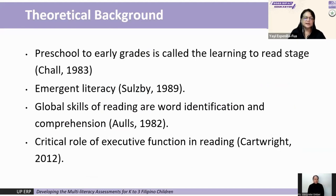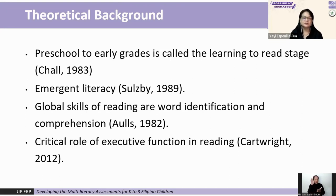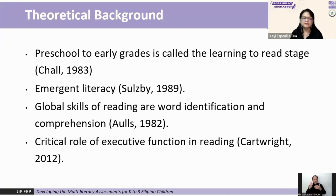What does theory say about early literacy? Preschool to early grades is called the learning to read stage. Emergent literacy describes children's literate behaviors prior to formal schooling that precede and develop into conventional literacy. The most global skills of reading are word identification and comprehension. Executive function, which includes an array of processes, plays a critical role in the development of academic skills such as reading.